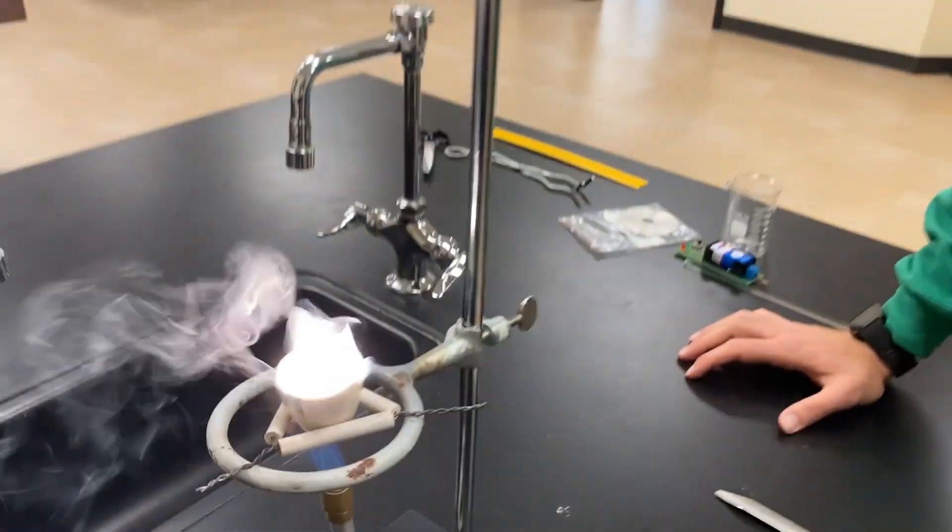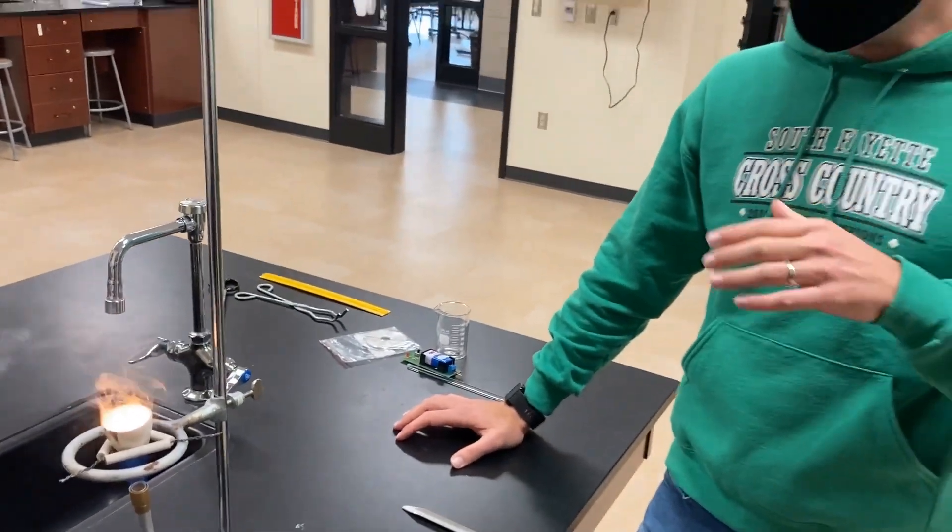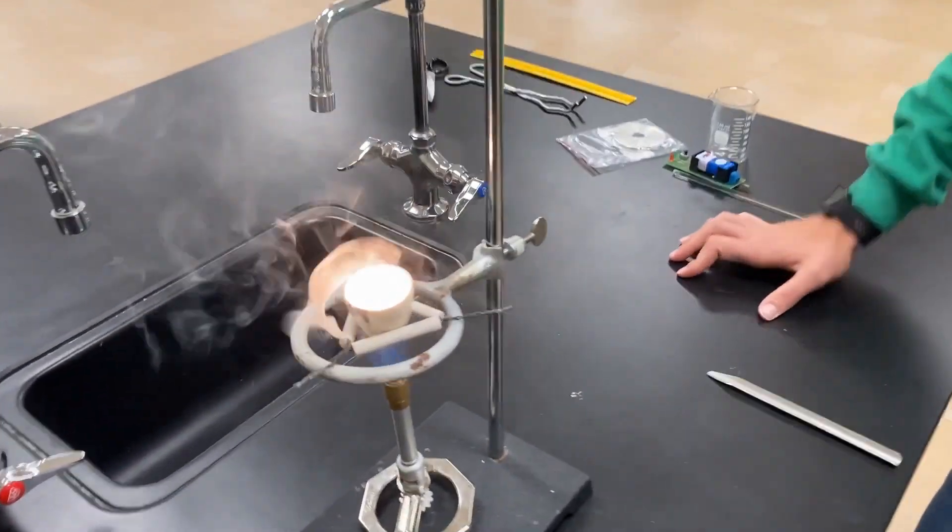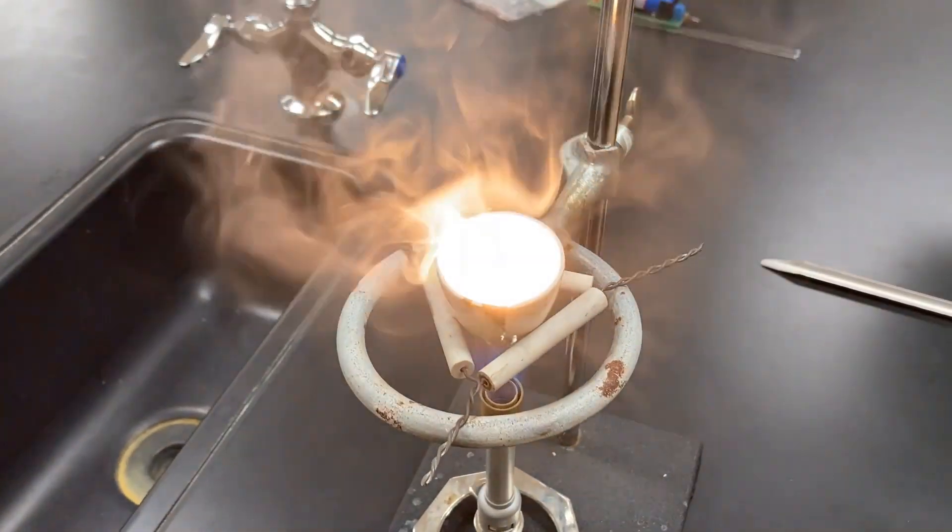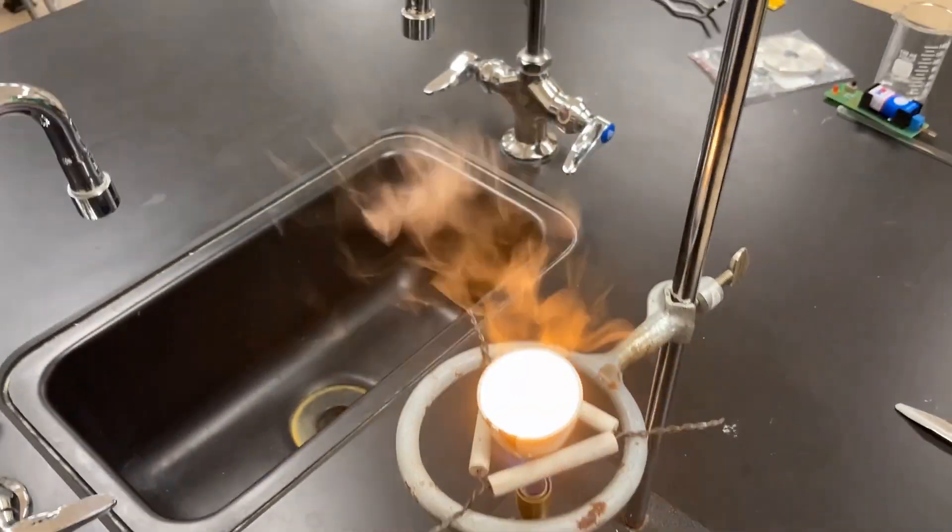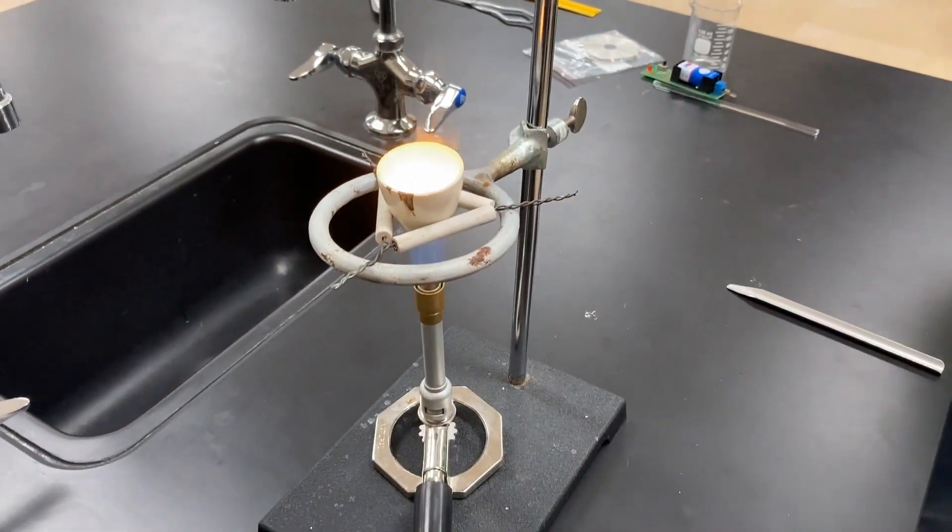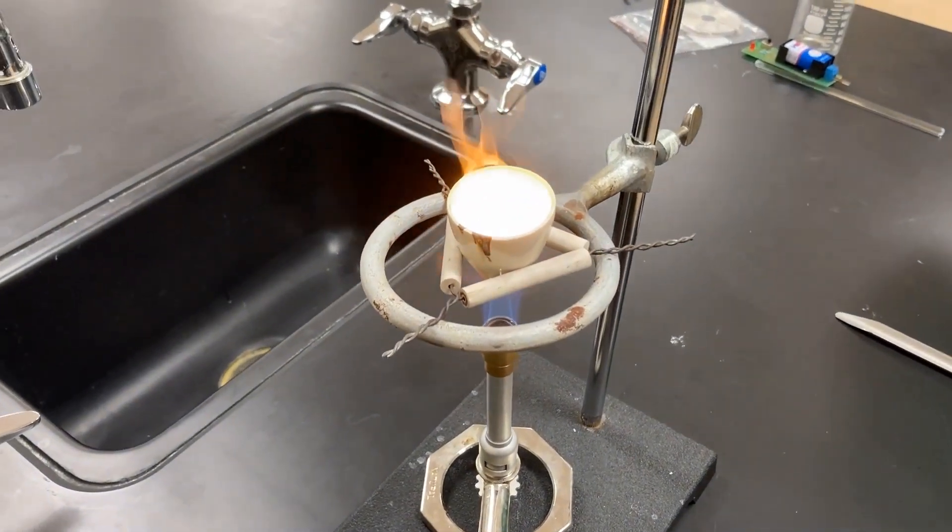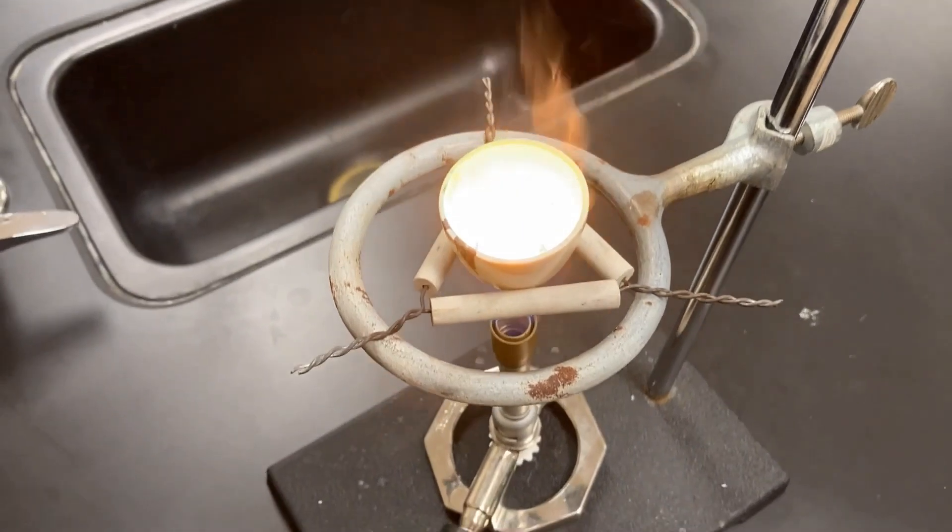All right, so at this point you can see a highly exothermic reaction, giving off lots of heat and light there as a result of that so that we know that chemical change has taken place. So we're going to assess a couple of other variables to confirm that we've actually had a chemical change here in the production of an ionic compound and we'll do that once we've given our crucible a chance to cool.